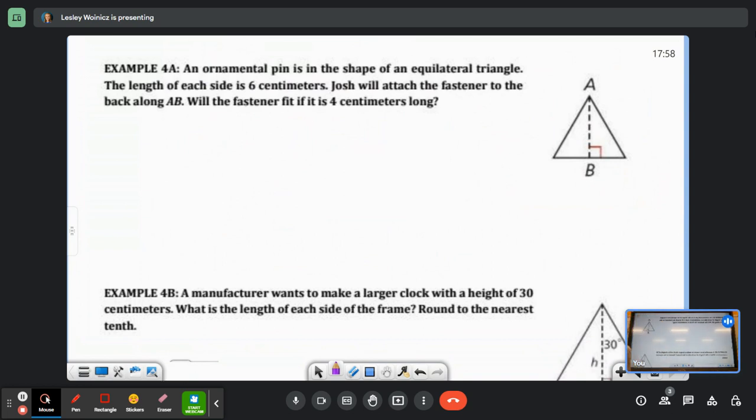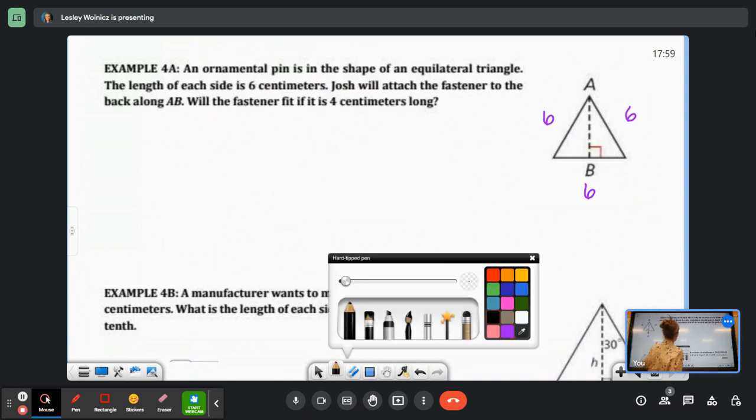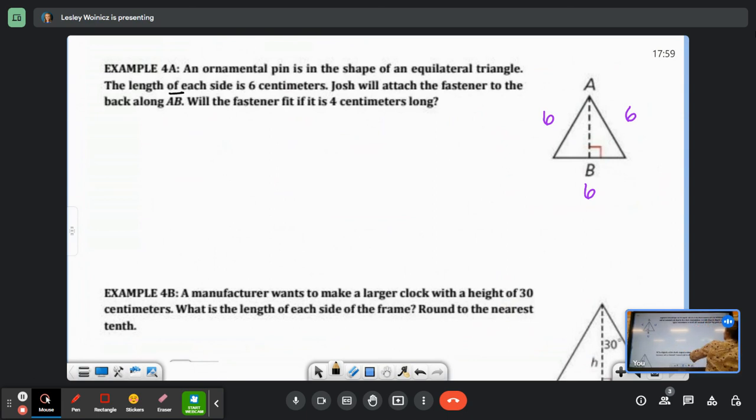So an ornamental pin is in the shape of an equilateral triangle. The length of each side is 6 centimeters. So this one's 6, this one's 6, and this one is 6. Josh will attach the fastener to the back along segment AB.